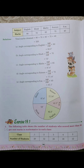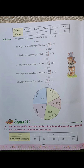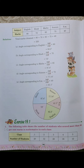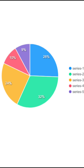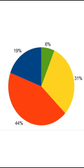Today we will learn about pie charts and how to read them. Before doing sums based on pie charts, we should have knowledge of what a pie chart is. A pie chart is a type of graph in which a circle is divided into sectors that each represent a proportion of the whole.